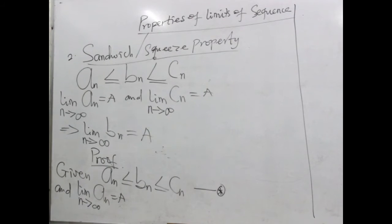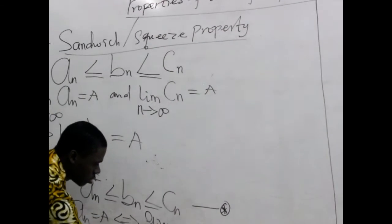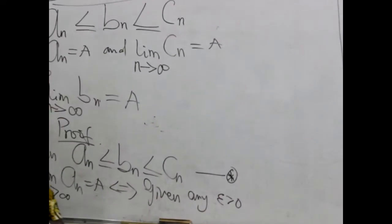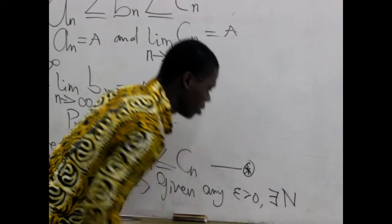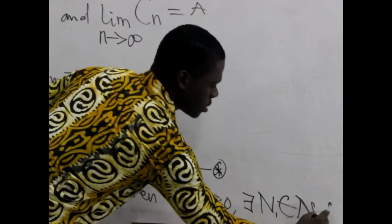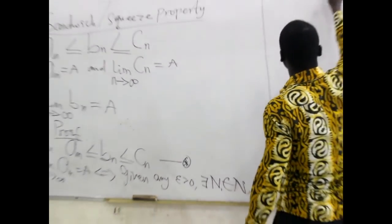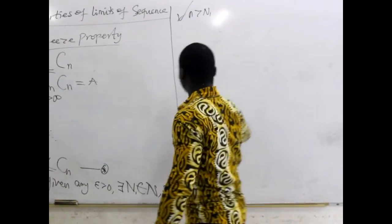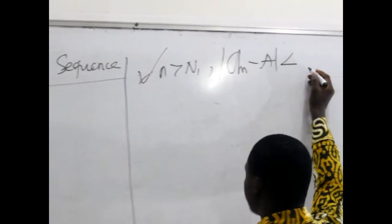If this is equal to a, then you will recall — from one of our tutorials on limits of sequences — we made mention of the fact that this has an equivalent statement: given any epsilon greater than zero, there exists N₁ belonging to the set of natural numbers, such that for all n greater than N₁, the absolute value of the sequence minus its limit is less than epsilon.